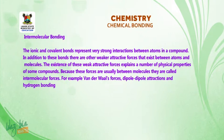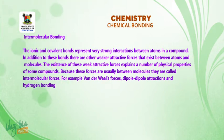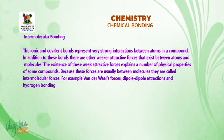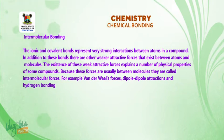Welcome back. Now we go into intermolecular bonding. The ionic and covalent bonds represent very strong interactions between atoms in a compound. In addition to these bonds, there are other weaker attractive forces that exist between atoms and molecules. The existence of these weak attractive forces explains a number of physical properties of some compounds. Because these forces are usually between molecules, they are called intermolecular forces — for example, van der Waals forces, dipole-dipole attraction, and hydrogen bonding.